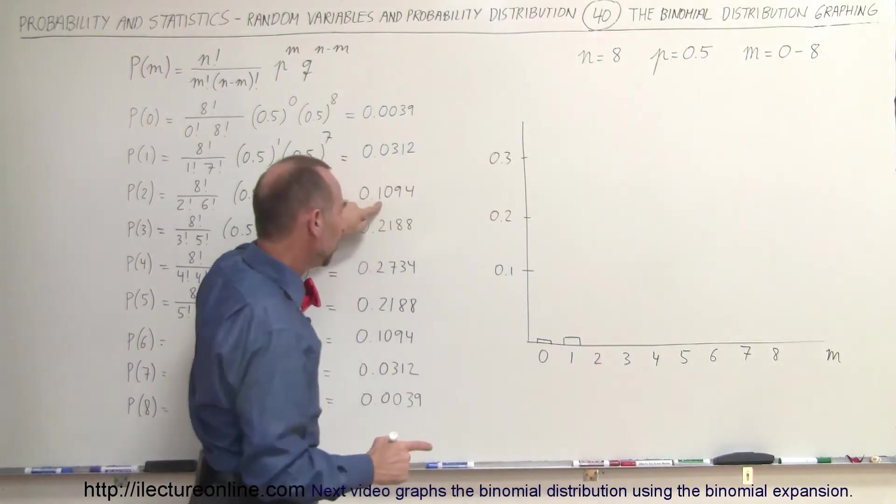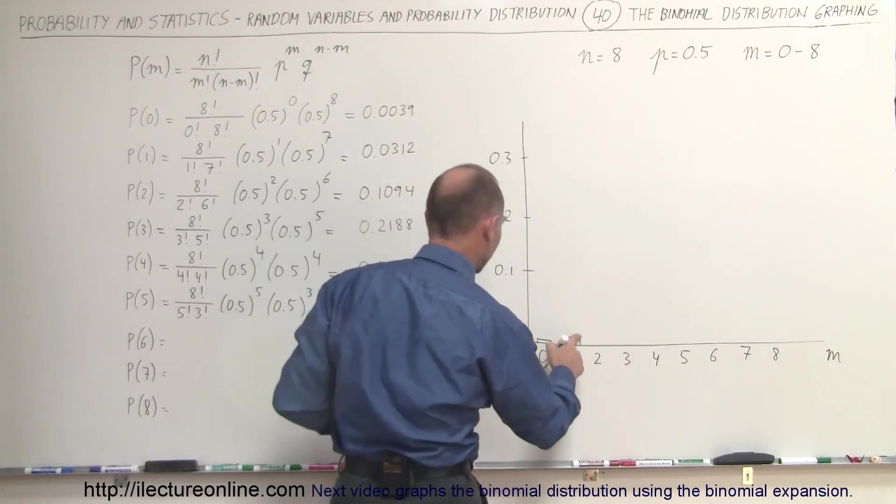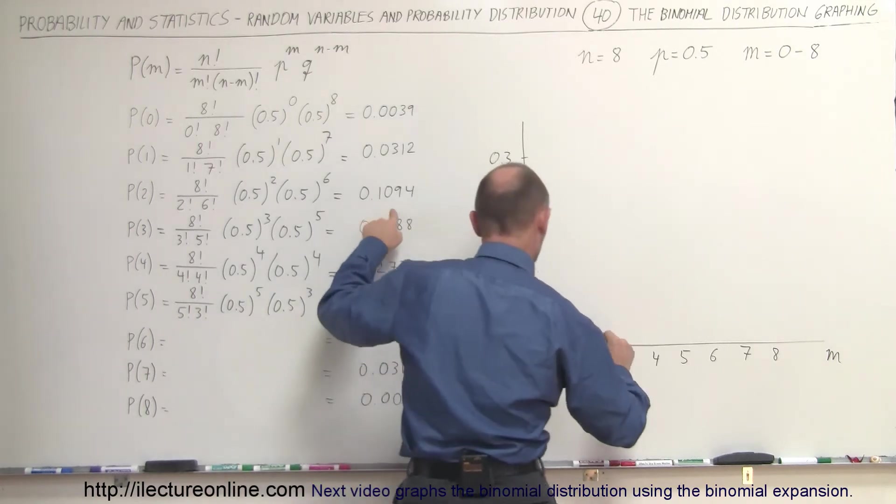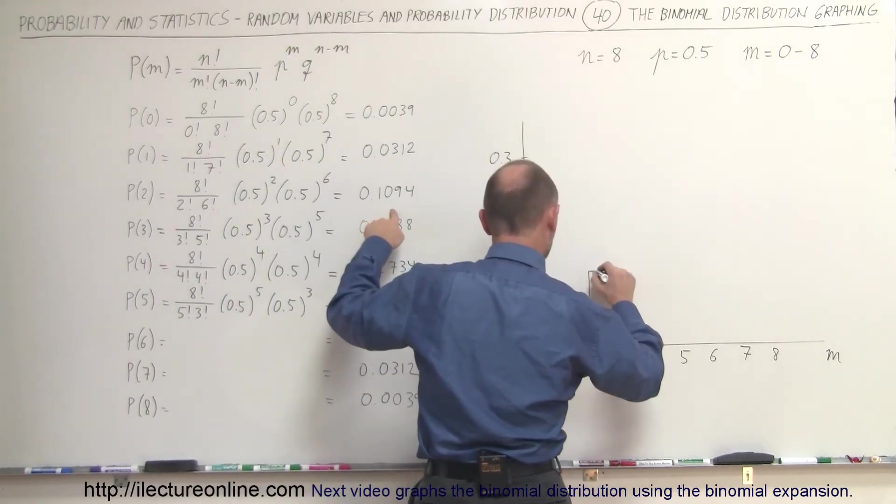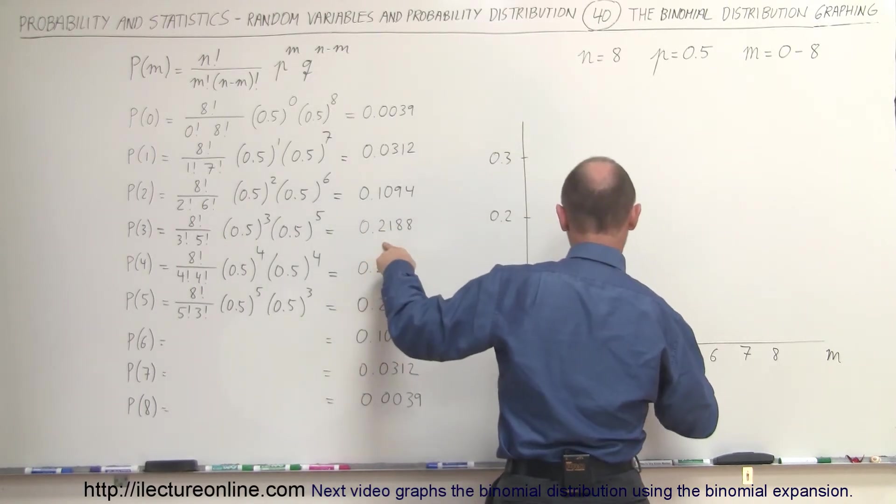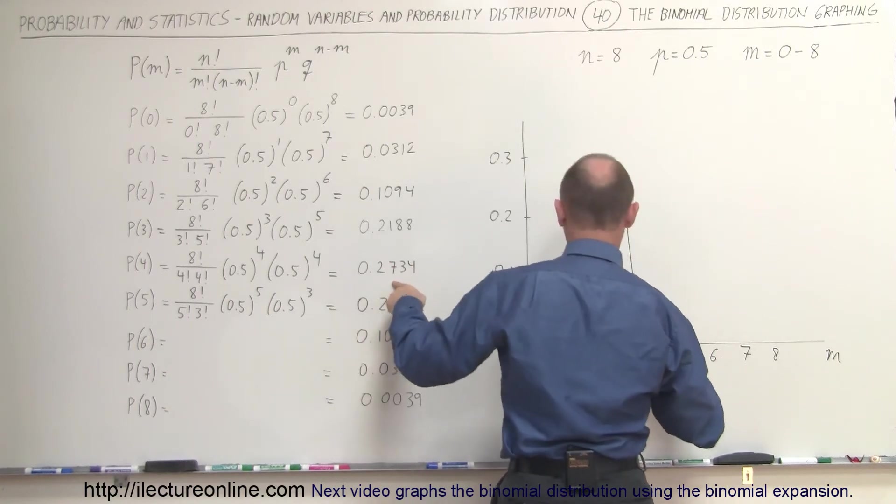For two, that's 0.1. Actually, let's see here, 0.1... this is actually a little bit more. Let's make it a little bit bigger like so. 0.109, that would be right here. Three, that would be 0.2188, and four, that would be 0.27, which is about there.